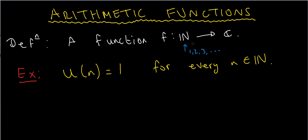By the natural numbers, I just mean the positive integers — so 1, 2, 3, 4, 5, and so on.